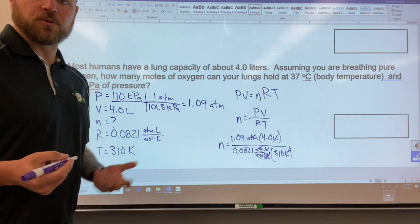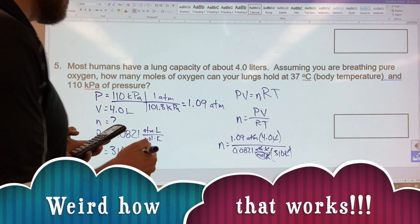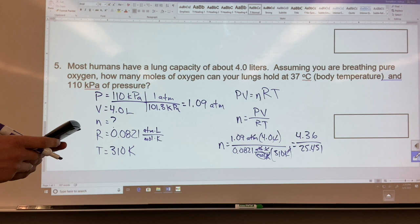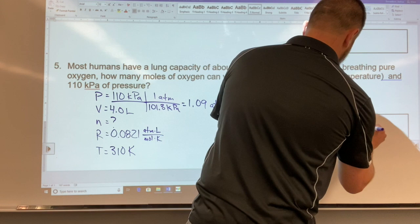So I'm going to solve both of these just to have a numerator and denominator that all together, so 4.36 divided by 25.421, and I get that my number of moles is equal to 0.2 sig figs, so 0.17 moles.